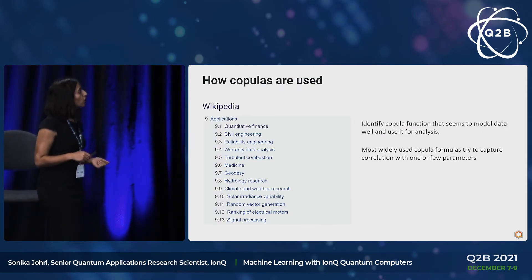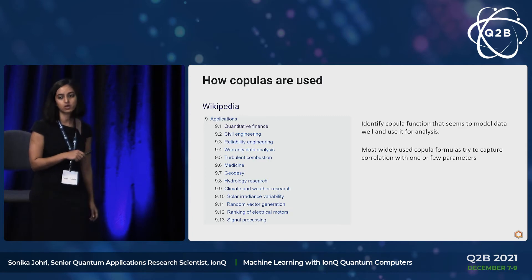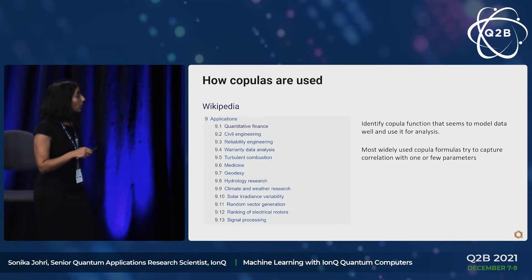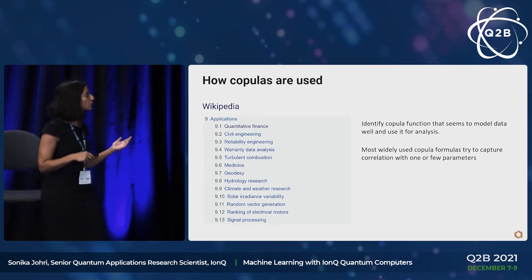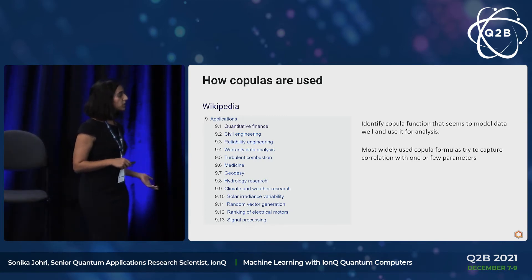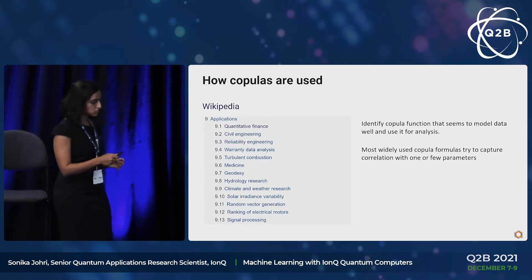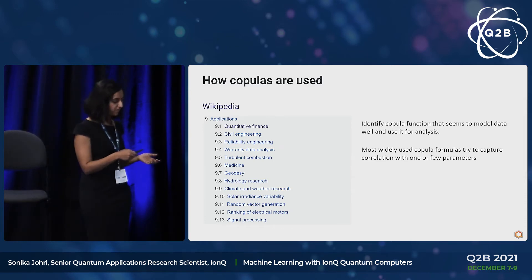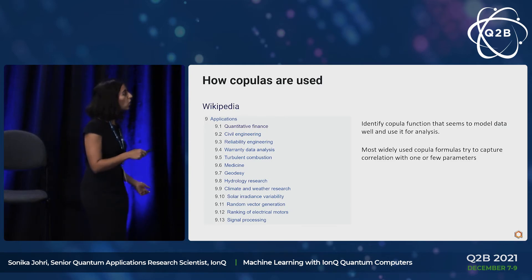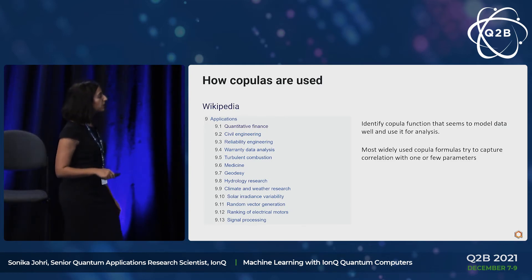If you look at copulas on Wikipedia, you'll see a broad range of applications — they're used in finance, engineering, climate science, medicine, and signal processing. So if you can show that quantum computers are useful for the study of copulas, you immediately find applications of quantum computers in all of these different areas.